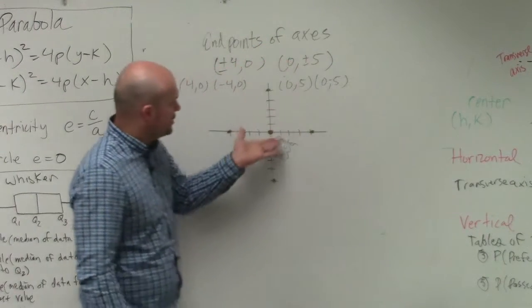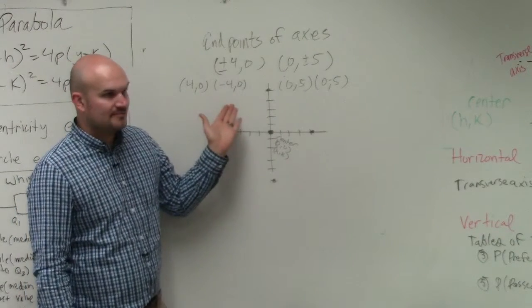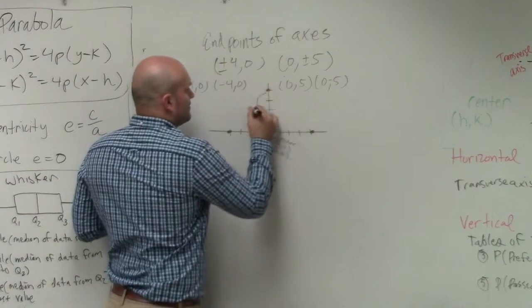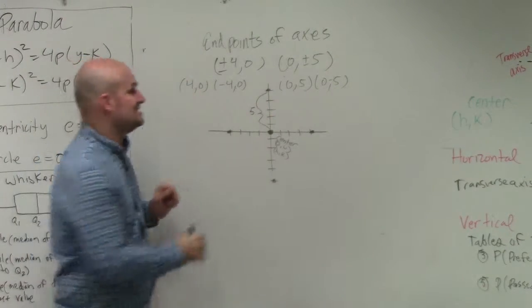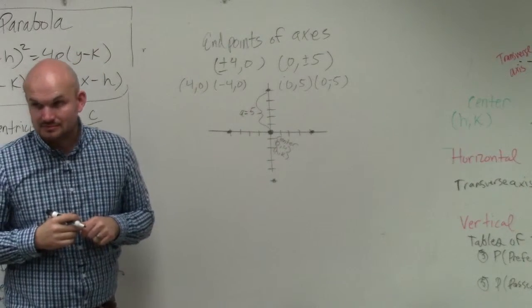So obviously, what is our longer length from our center to one of our vertices? What's the longer length? Major. 5. So we can say that that length is 5. So that means that's going to be a, right? Yes?